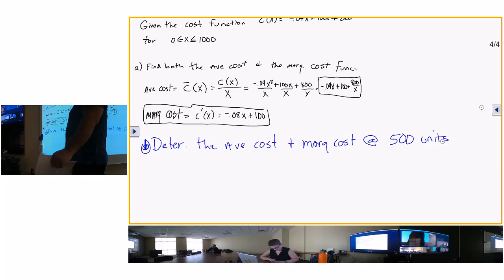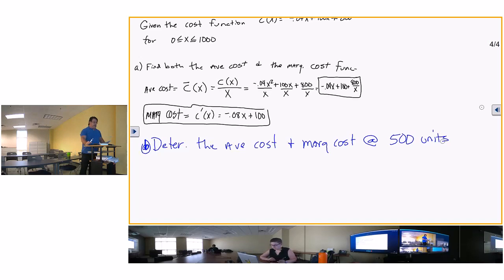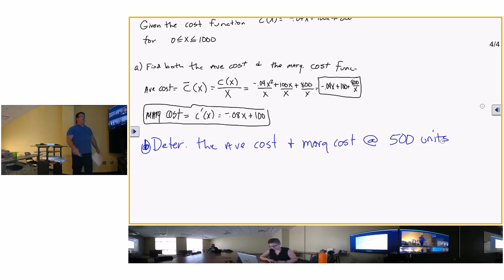Now the question - I'm going to do this in blue because this is a question they might ask. Part B: determine the average cost and marginal cost at 500 units. 500 widgets, 500 cars, 500 boxes, 500 rings, 500 stuffed animals, whatever you want to make. So what are you going to do with that 500? Plug and chug.